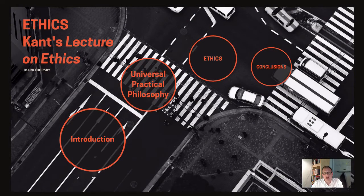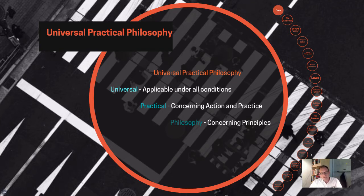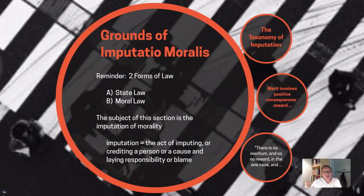Hello and welcome to Ethics. My name is Mark Doorsby. In this video we'll be taking a look at Kant's lecture on Ethics. Hopefully you've been following the series — we've been looking through Kant's universal practical philosophy. Today we're going to finish up his section on universal practical philosophy. Specifically, we're going to start with his discussion of the grounds for the imputation moralis.